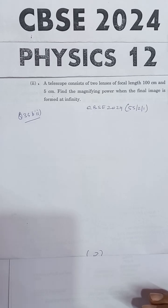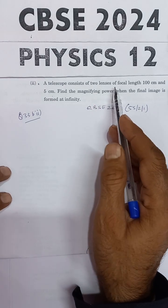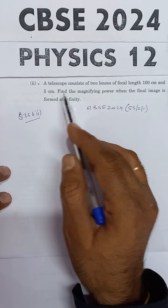This question is from CBSE 2024 Physics Examination. Statement of the problem says, a telescope consists of two lenses of focal length 100 cm and 5 cm.